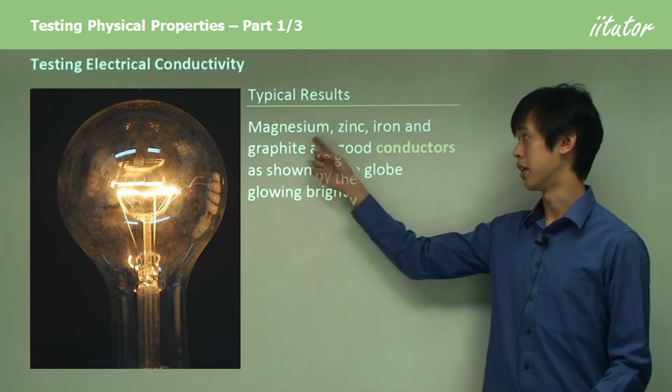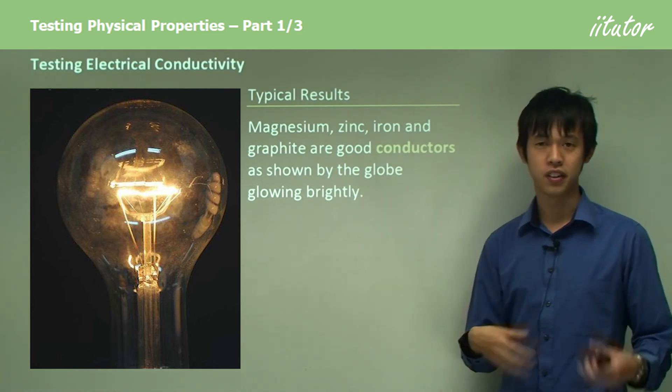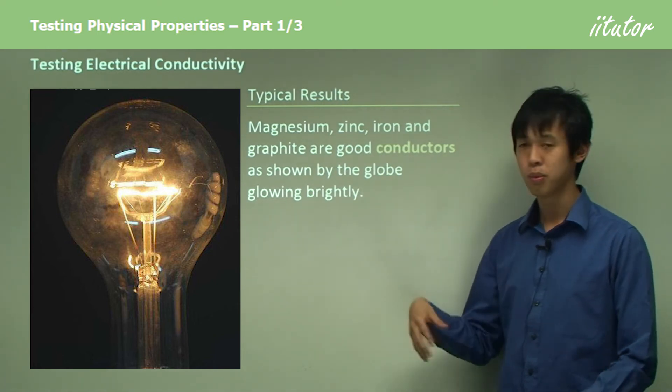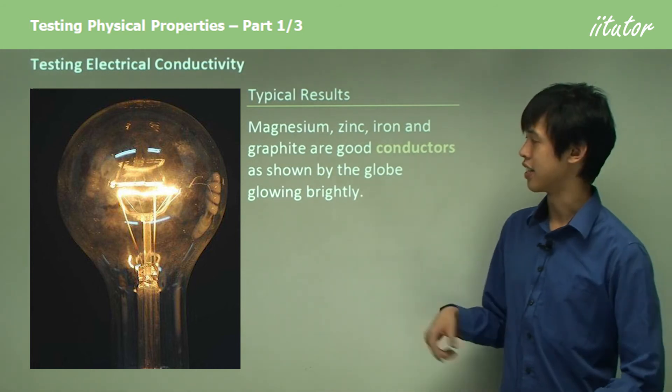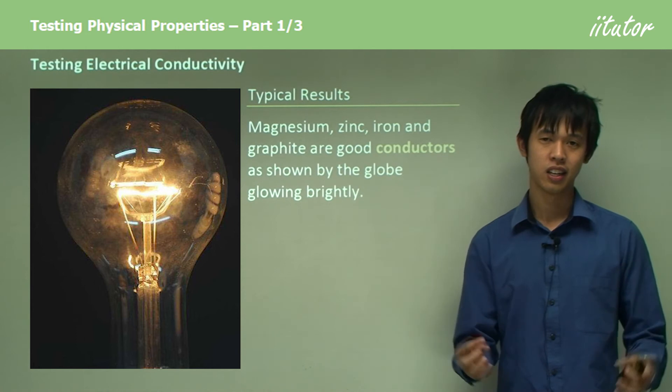If you actually do it, the ammeter would tell you exactly which one is the best by showing the highest number. Or you could look at the globe. The brightest glow will be the one that's the best conductor.